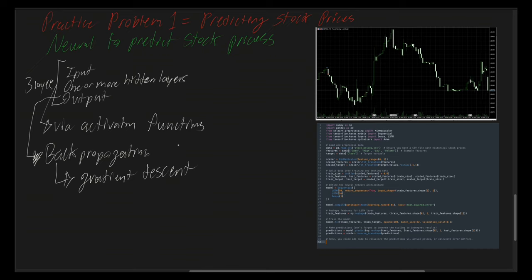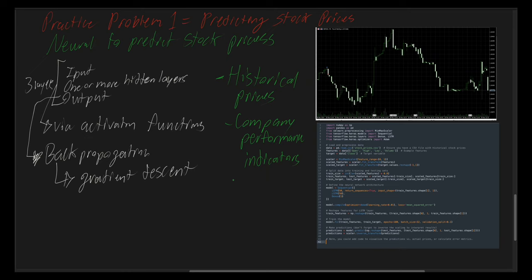To develop the whole neural network, we first have to investigate the data system behind this network. It must process historical prices, company performance, and market sentiment analysis to predict future stock prices. A neural network could efficiently capture the complex nonlinear relationships between these variables, since you have loads of people already trading simultaneously, and this can play to many markets as well.